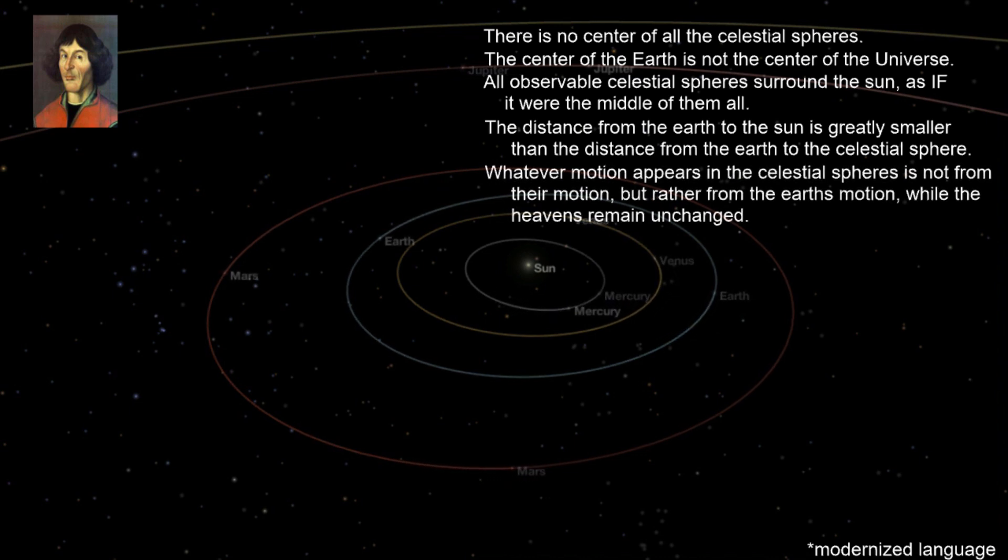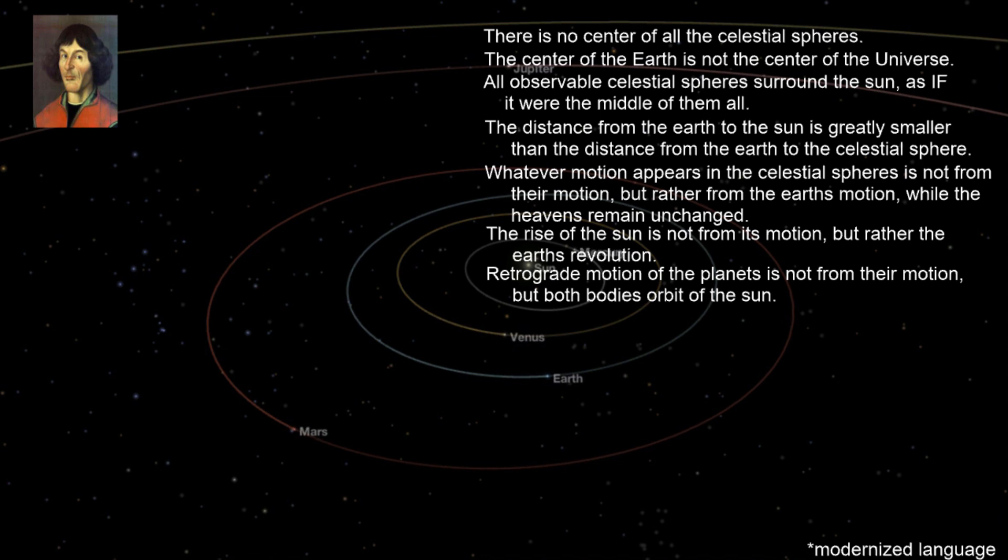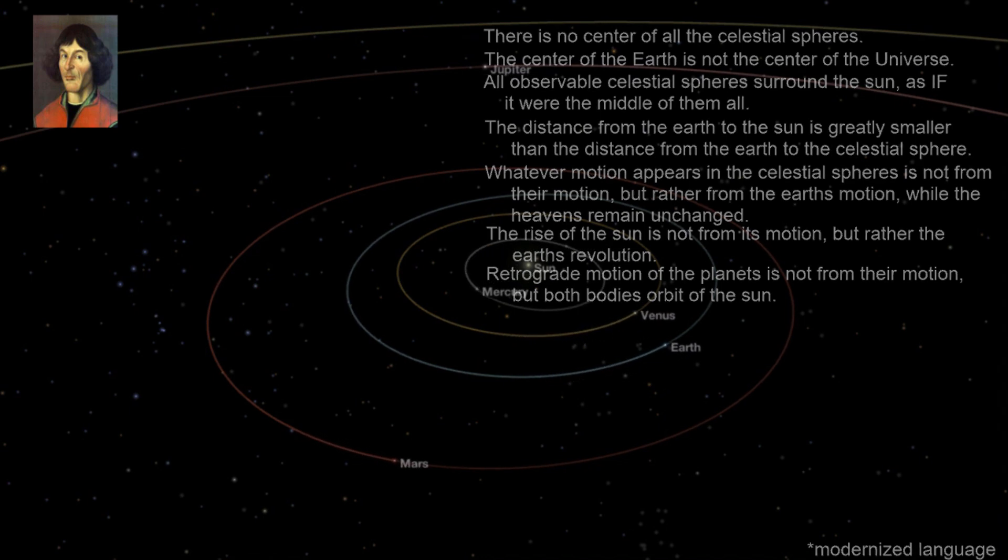Whatever motion appears in the celestial spheres is not from their motion, but rather from the Earth's motion, while the heavens remain unchanged. The rise of the Sun is not from its motion, but rather the Earth's revolution. Retrograde motion of the planets is not from their motion, but both bodies orbit of the Sun.